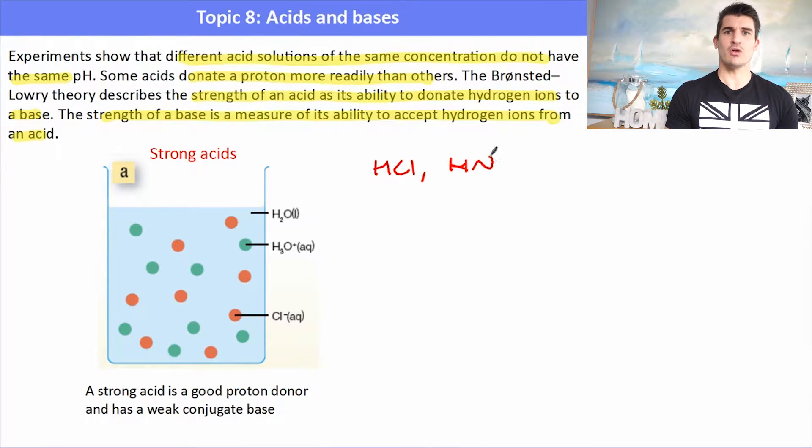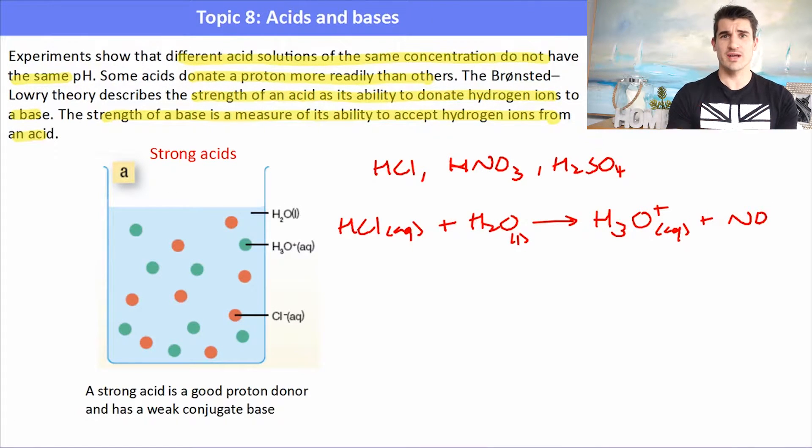Strong acids, such as HCl hydrochloric, HNO3 nitric, and H2SO4 sulfuric, are all defined as strong acids. The reason for that is they are fully able to donate their protons. For example, HCl reacts with water to form H3O+ and NO3- ions, and every HCl molecule will donate its protons to water to form H3O+, every one of them. So it's 100% ionized.